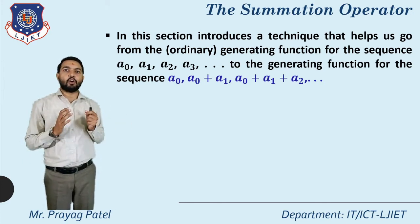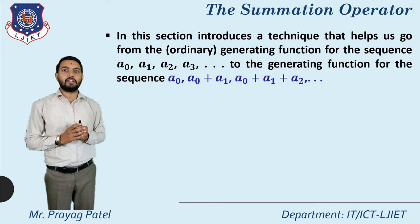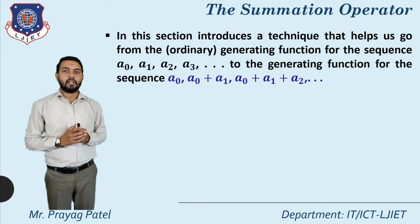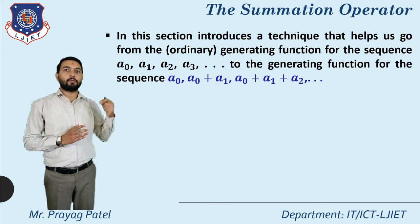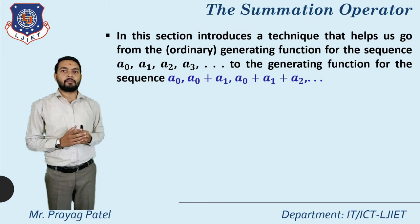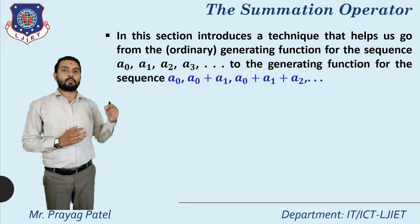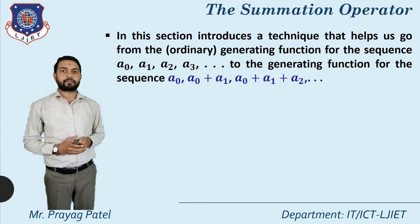That means we already know the generating function for a0, a1, a2, a3. Now we have to find the generating function for a0, then a0+a1, then a0+a1+a2, and so on.